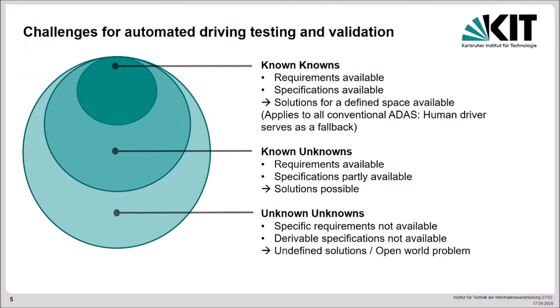Let us start with the challenges from a testing and validation point of view for automated and autonomous driving. According to the model shown here, we can split the task in three different areas. First, we have the so-called known knowns, which is a testing space where we are sure about the requirements and specifications. This applies to all conventional advanced driving assistance systems because the human driver always has to serve as a fallback.